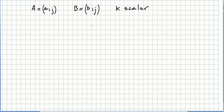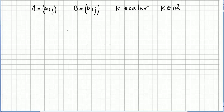This video is on the new chapter of square matrices, introducing the concepts of diagonal and trace. We are going to pick two matrices, matrix A and matrix B, and K a scalar, where K will be a real number. We are going to see some properties of the trace of matrices.